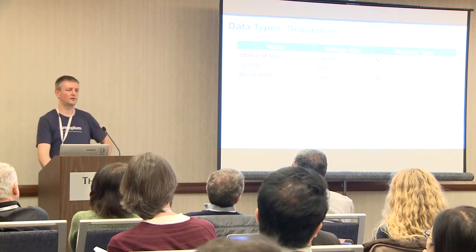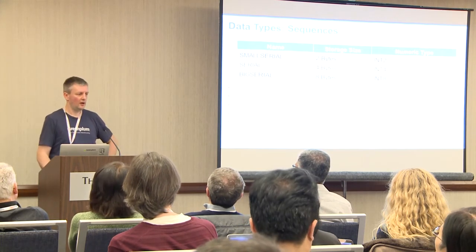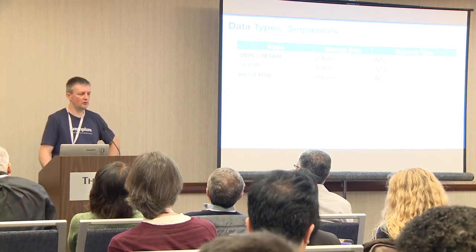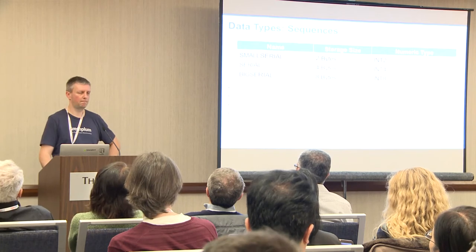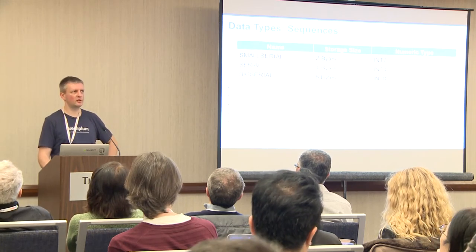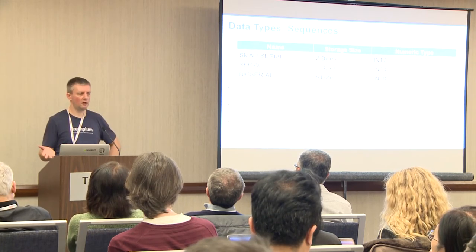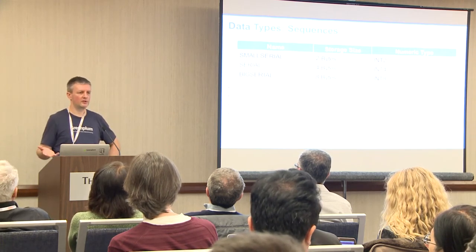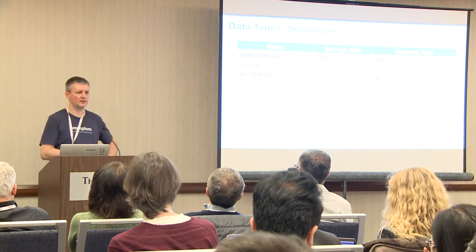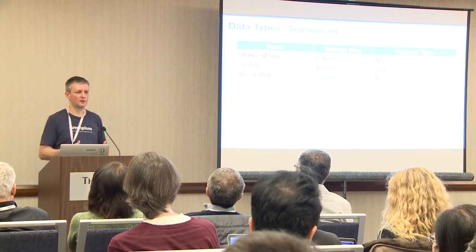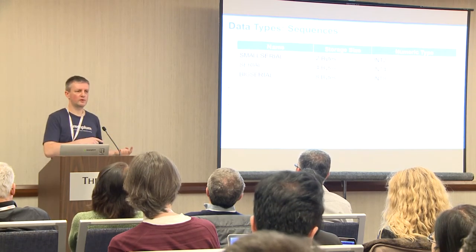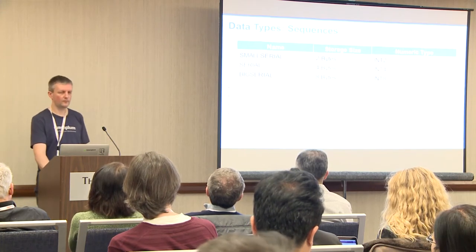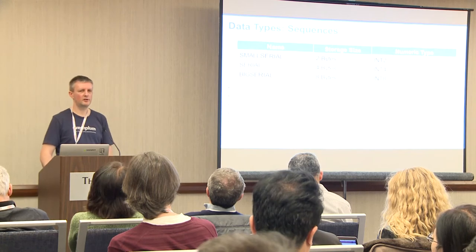Any time you need to have precise numbers, you must use numeric. One exception: if you're doing money, you can store everything in pennies instead of dollars in a bigint, as long as it fits. But then you have to do all the calculations from pennies to dollars and vice versa. And yes, numeric is a bit slower.